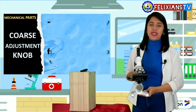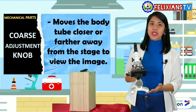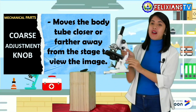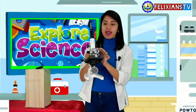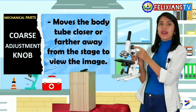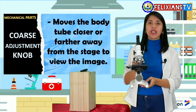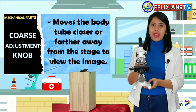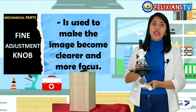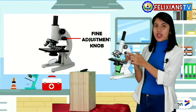The last is the mechanical parts. It provides support and protection to the other parts of the microscope. This includes the coarse adjustment knob, the fine adjustment knob, the stage and the stage clip, the arm and the base, the revolving nosepiece, and the body tube. Let's first discuss the coarse adjustment knob. The coarse adjustment knob moves the body tube closer or farther away from the stage to view the image. So, this is the coarse adjustment knob. The fine adjustment knob is used to make the image become clearer and more focused. So, this is the fine adjustment knob.